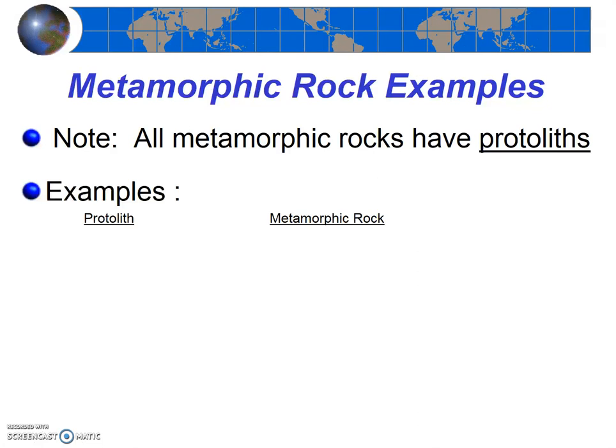Protoliths can be igneous rocks, sedimentary rocks, or even other metamorphic rocks. But when these rocks undergo temperatures and pressures much greater than the conditions under which they originally formed, they change — they can change their texture and their mineral composition. Importantly, they're not melting, because that would create magma. So these protoliths are just undergoing changes which transform them from one type of rock into a metamorphic rock.